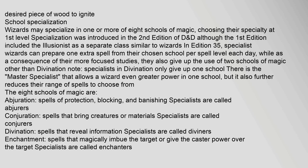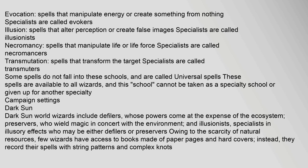Wizards may specialize in one or more of eight schools of magic, choosing their specialty at first level. Specialization was introduced in the second edition of D&D. The schools include: evocation — spells that manipulate energy or create something from nothing (specialists called evokers); illusion — spells that alter perception or create false images (specialists called illusionists); necromancy — spells that manipulate life or life force (specialists called necromancers); and transmutation — spells that transform the target (specialists called transmuters). Some spells do not fall into these schools and are called universal spells, available to all wizards and cannot be taken as a specialty.